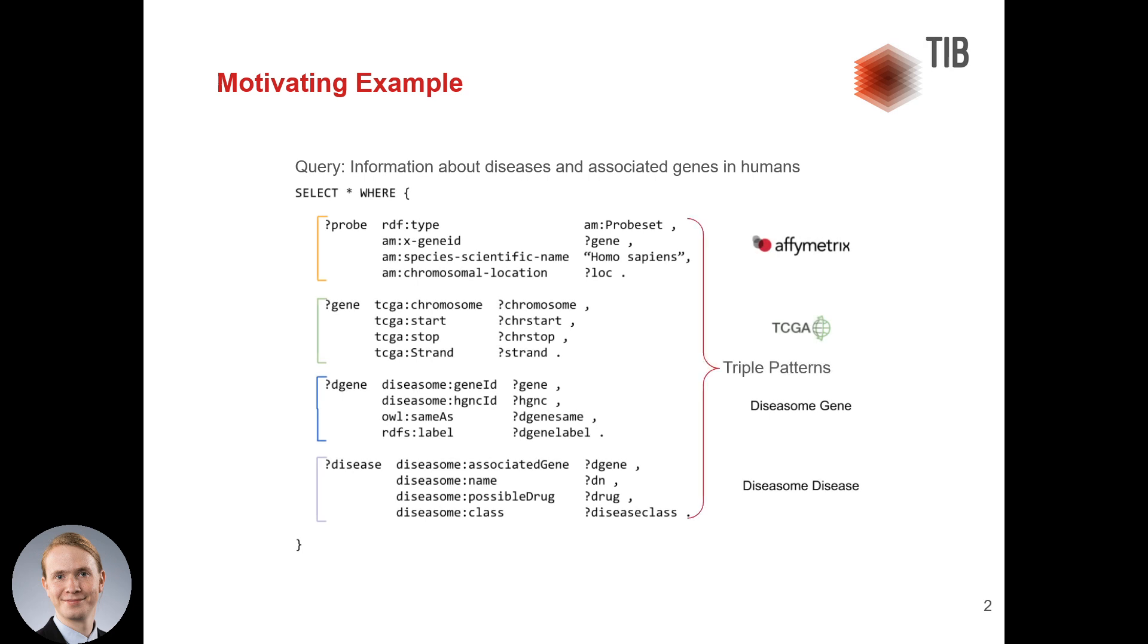Each line is called a triple pattern, and a triple pattern can have variables starting with a question mark or constants like the literal homo sapiens.